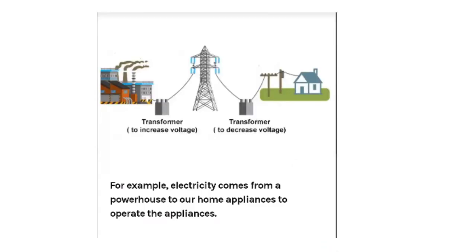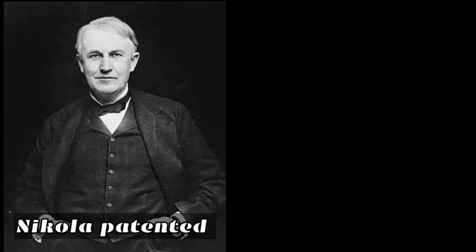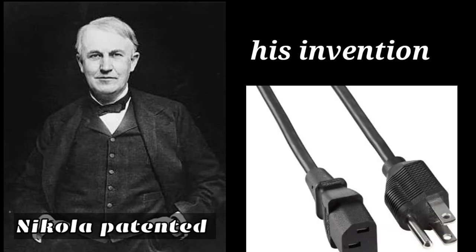AC stands for alternating current. It is an electrical current that reverses or alternates its direction of flow. On May 1, 1888, Nikola Tesla patented the rotating field motor, an invention that generates and transmits AC power still in use today.